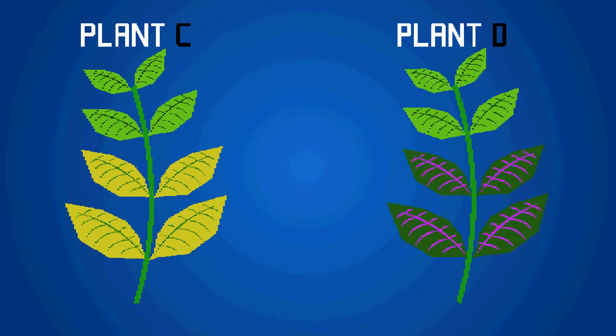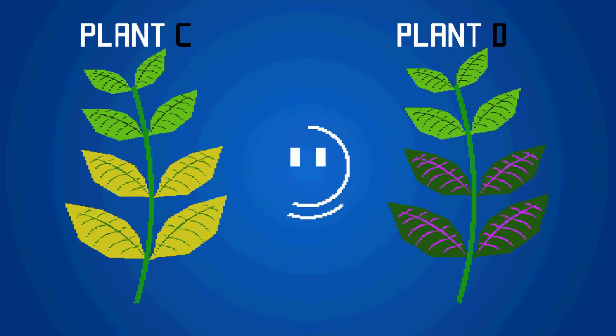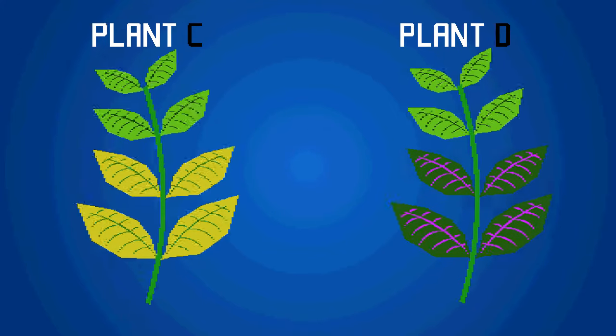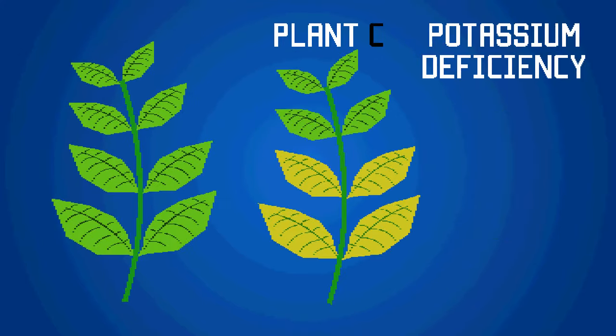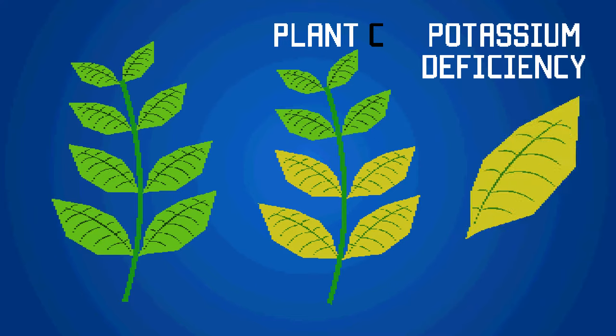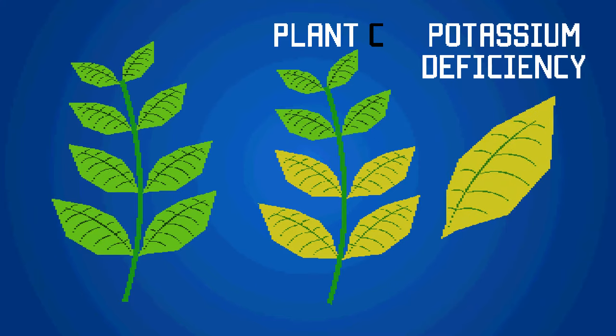Now let's look at Plants C and D. They are also both suffering from nutrient deficiencies. Why don't you pause the video here and write down any differences you see between them? Plant C had a potassium deficiency. The older leaves are yellow, but the veins remain green, and the plant is not growing properly.